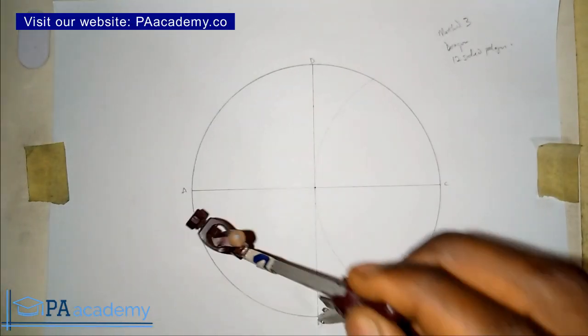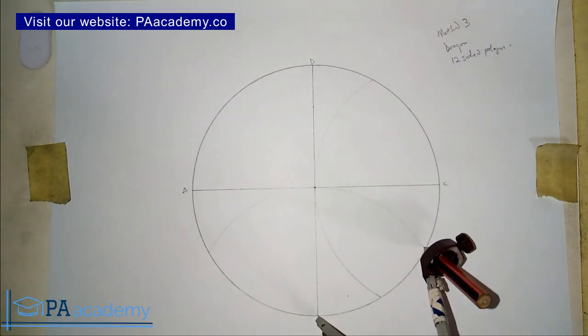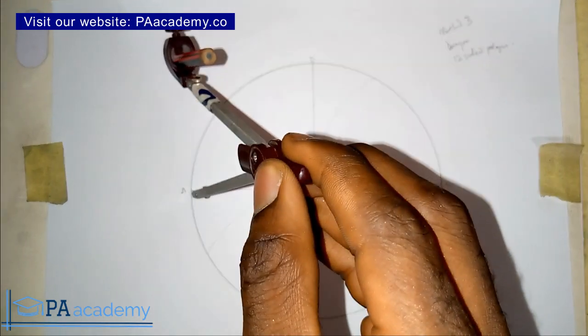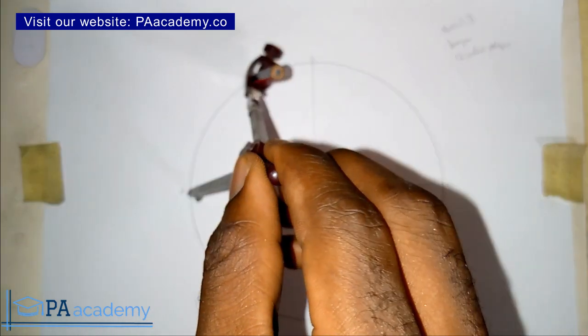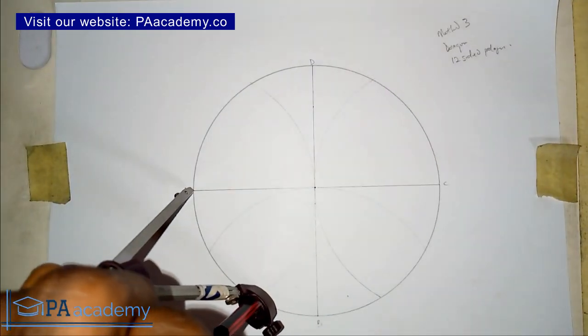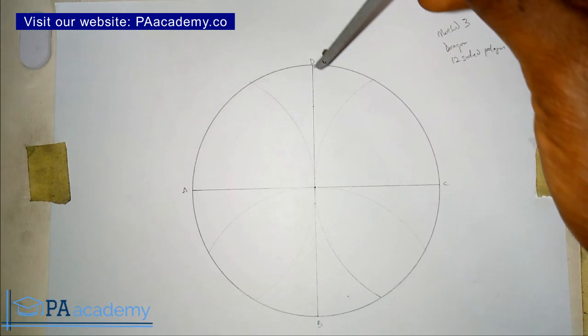With the same thing on point B. You are going to repeat it on all four points. I'm going to draw what we have like this. Then on point A also, you are going to be having something like this. And then on point D.